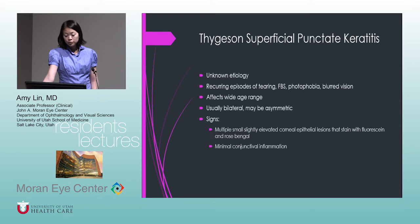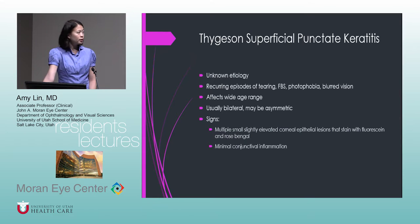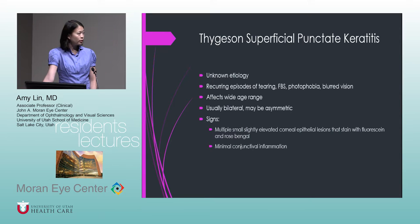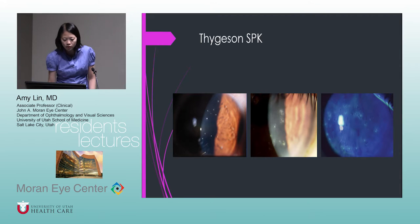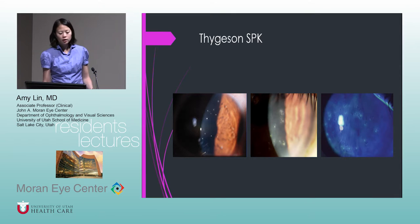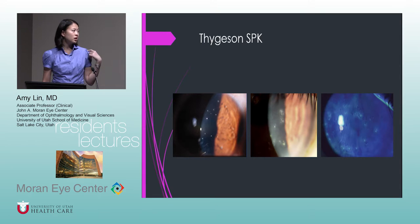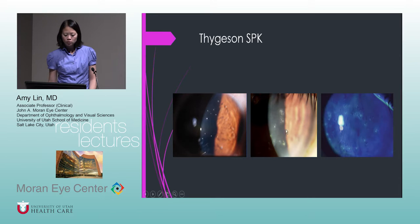Thygeson superficial punctate keratitis is of unknown etiology, with recurring episodes of foreign body sensation, photophobia, and blurred vision. It affects a wide age range, is usually bilateral but may be very asymmetric. Signs are small, slightly elevated corneal epithelial lesions that stain with fluorescein and rose bengal with minimal conjunctival inflammation. SPK really refers to this specific syndrome — it shouldn't be applied to dry eye in general.